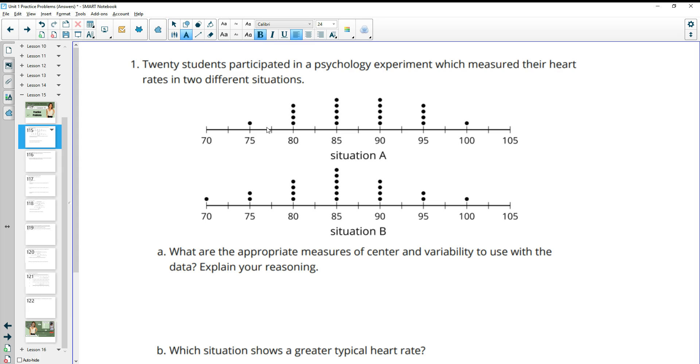So if you look at these dot plots, we can see that the shapes are both symmetric, and when we have symmetric distribution, then the best measure of center is the mean, and the measure of variability would be the MAD. So I'm going to say the mean and the mean absolute deviation would be appropriate, and my reasoning is because the data is symmetric.